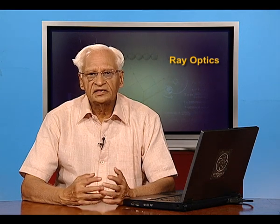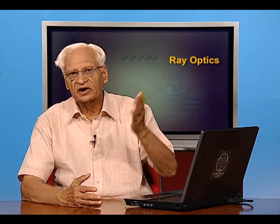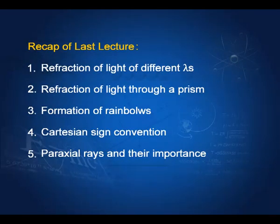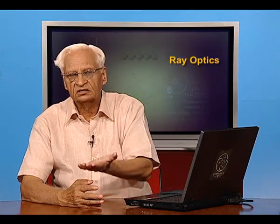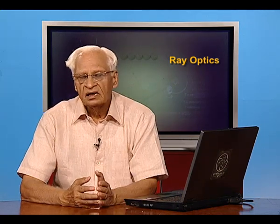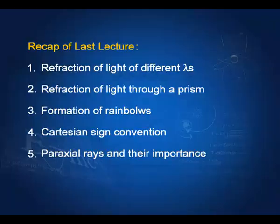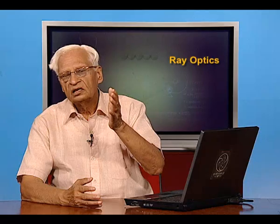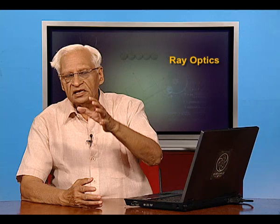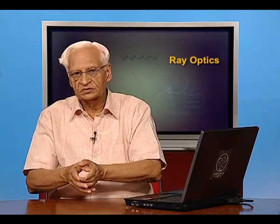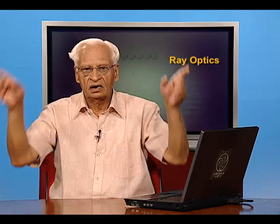In the last lecture, we studied the refraction of light of different colors and found that they refract to different extents. We also saw the reflection of light through a prism and found that there is a certain angle — the minimum angle of deviation — as we keep changing the incident angle. This angle of minimum deviation is important because it helps us in understanding the formation of rainbows. We saw the formation of primary as well as secondary rainbows. The difference is that the primary rainbow has a slightly smaller angular diameter and the secondary has a slightly larger angular diameter.